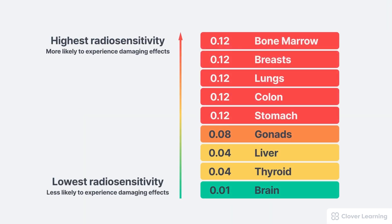In summary, a tissue with a high radiosensitivity is more likely to experience the damaging effects of radiation, like cell death or cell mutation, and it doesn't take as much radiation dose for them to be harmed. The most sensitive tissues in the human body are the bone marrow, the breast, the lungs, the colon, and the stomach. A tissue with a low radiosensitivity is less likely to experience the damaging effects of radiation, and it takes a lot more radiation dose for them to be harmed.